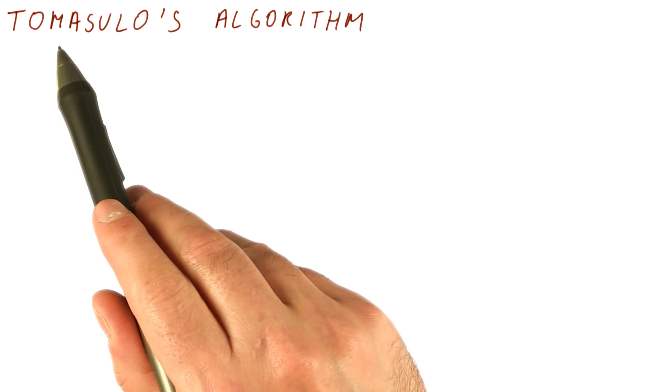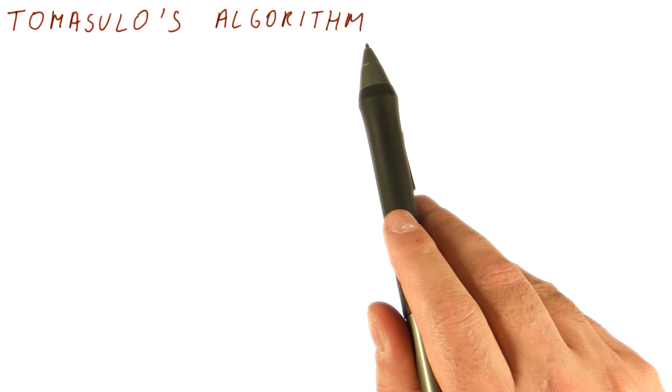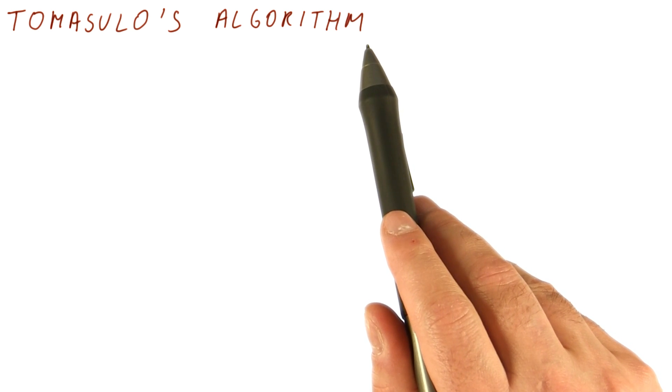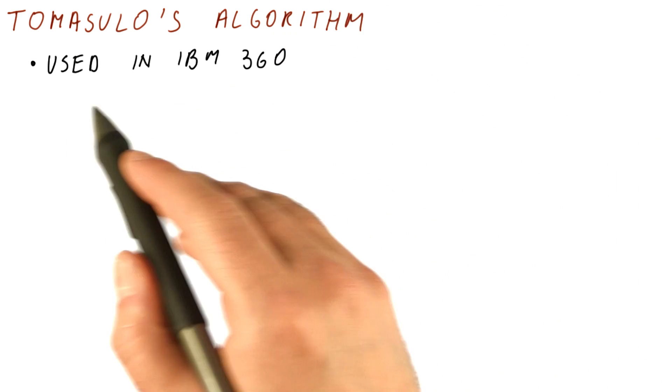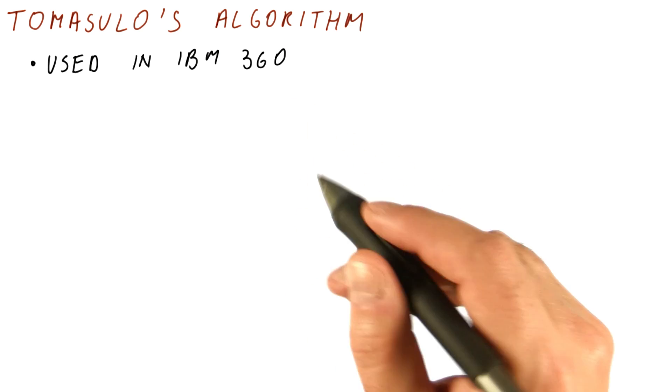The first technique we will consider is Tomasulo's algorithm. It's one of the first techniques for out-of-order execution and is now more than 40 years old. It was used in the old IBM 360 machines, which are now also more than 40 years old.